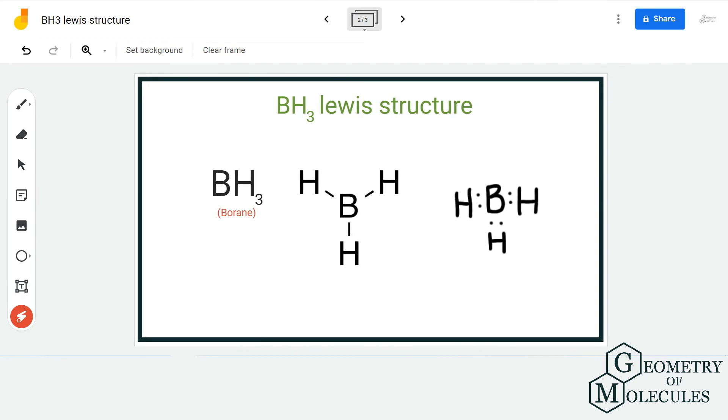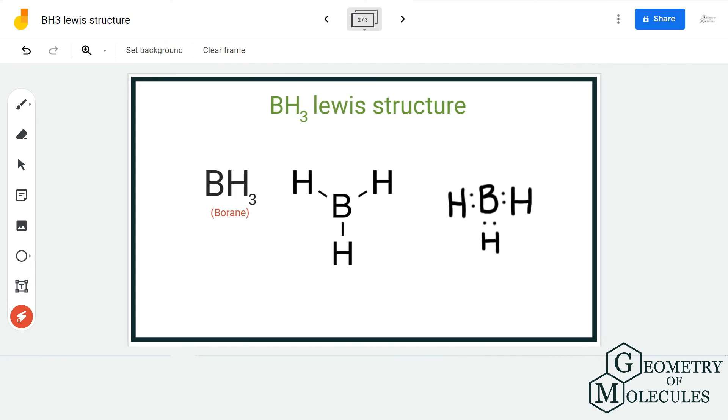It can do away with six valence electrons in its outer shell, and hence this is the Lewis structure for BH3 molecule.